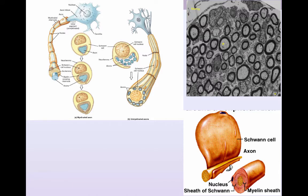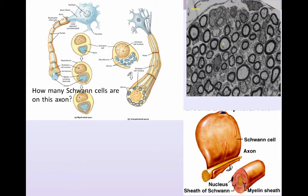It might take hundreds, perhaps even thousands of Schwann cells in order to myelinate an entire axon in the peripheral nervous system. Even in neurons where the axon is unmyelinated, the Schwann cell wraps around them and provides some protection, but not the same type of insulation. These are unmyelinated axons in which the action potential is going to move along much more slowly.